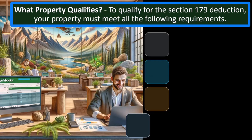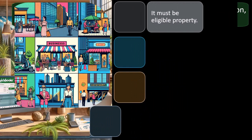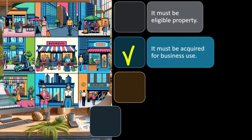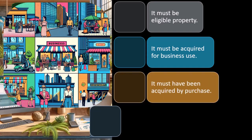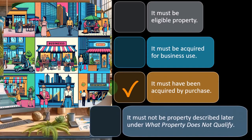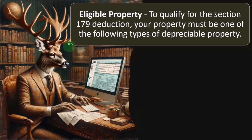What property qualifies? To qualify for the Section 179 deduction, your property must meet all of the following requirements. It must be eligible property. It must be acquired for business use — obviously we're not talking about personal stuff. You can't buy a house you plan on living in and take the 179 deduction because that's personal. This is the business side. It must have been acquired by purchase, and it must not be property described later under what property does not qualify.